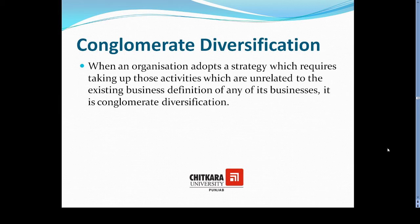For example, if a business is in food and beverages and is now thinking to open a textile business, it is starting a totally new venture — that would be conglomerate diversification. In concentric diversification, however, the new business or new products are related to the existing business or existing product.